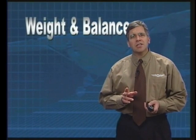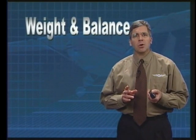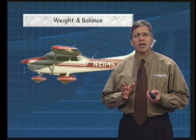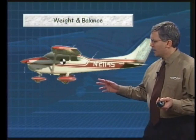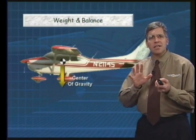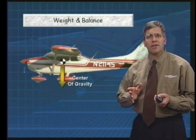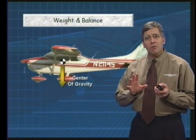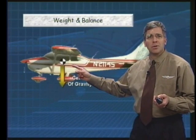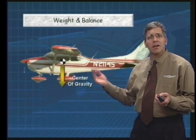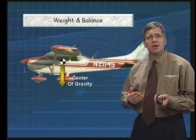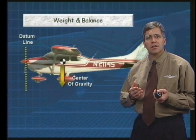In addition to considering weight, you must also ensure that the load is arranged to keep the aircraft in balance. This balance point, as you recall, is referred to as the center of gravity, which you can see right here. The CG, for short, is simply the point where all the weight of the aircraft is said to be concentrated. For an aircraft to fly safely, this point must be kept between specified limits both fore and aft. The CG is always expressed as inches aft of the datum, such as 43.44 inches.